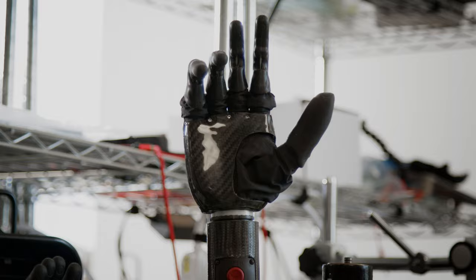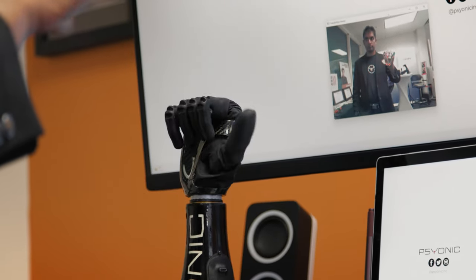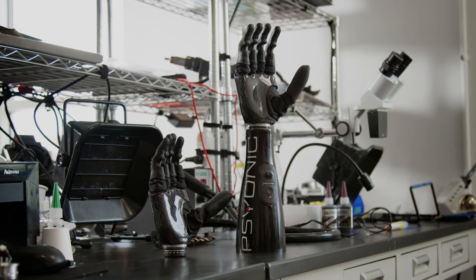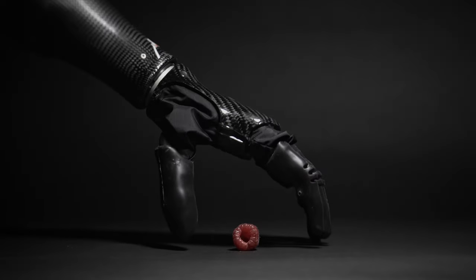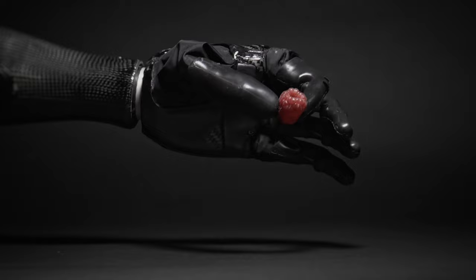Before our hand came along, what we call a multi-articulated hand where all the fingers can move individually, it was only covered by about 10% of insurers in the US. By getting it covered under Medicare we've expanded that access to 75% of patients who can now afford the most advanced bionic hand in the world.